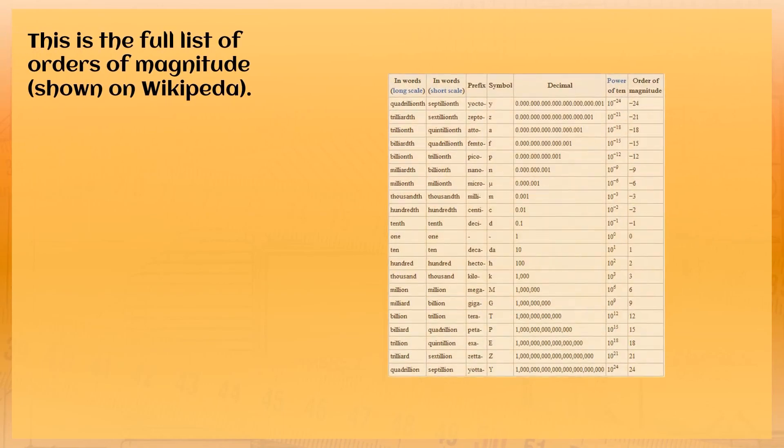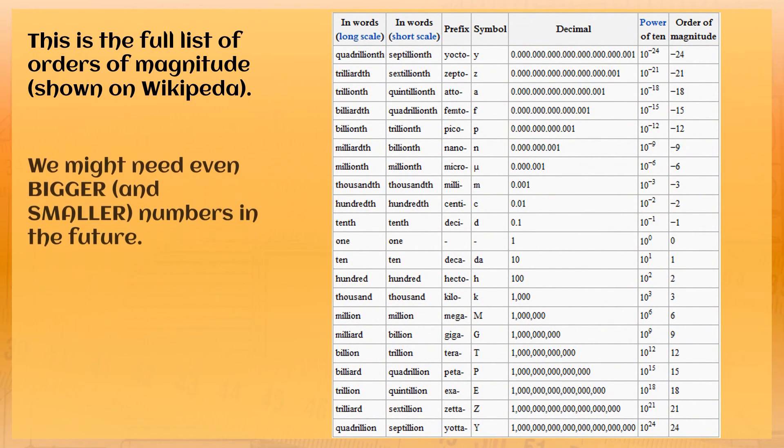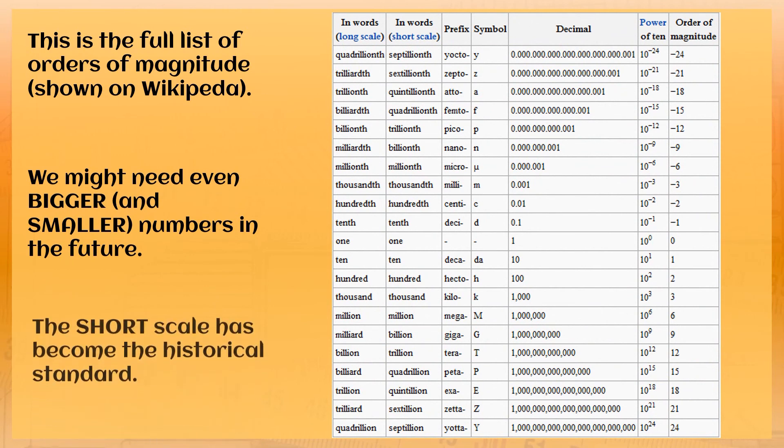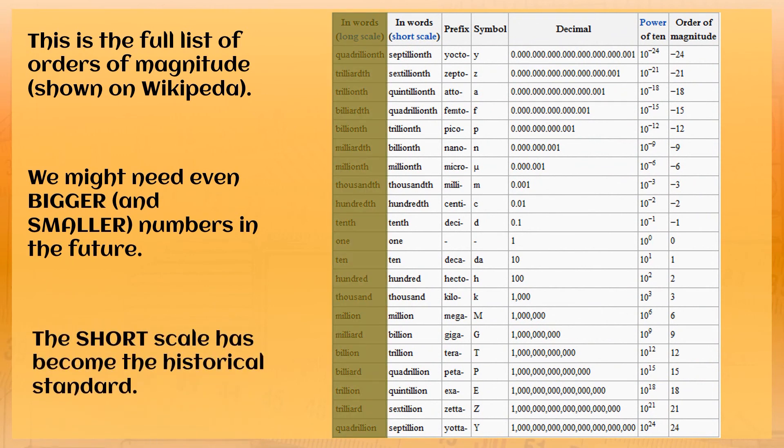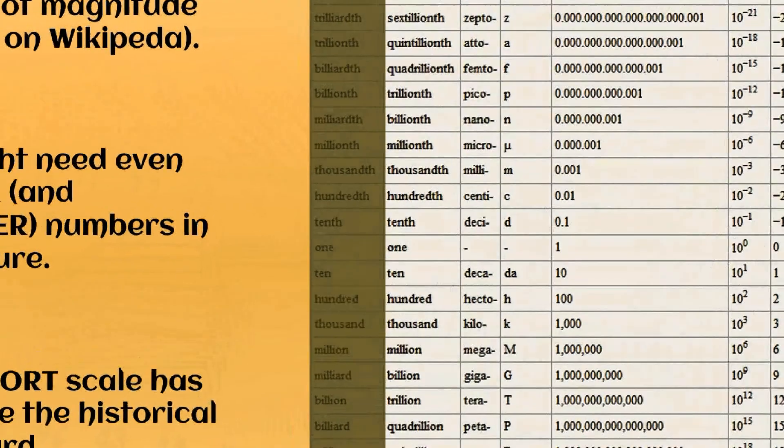Here is a full list of orders as shown on Wikipedia. And to be honest, we might need even bigger and smaller numbers in the future. But there is another way that scientists can use to write these numbers. And that's what we're going to look at in the next video on standard form or scientific notation. It will include a little bit more math talk. And hopefully that will help you to understand exactly how these orders are working. Because it's a key part of science.